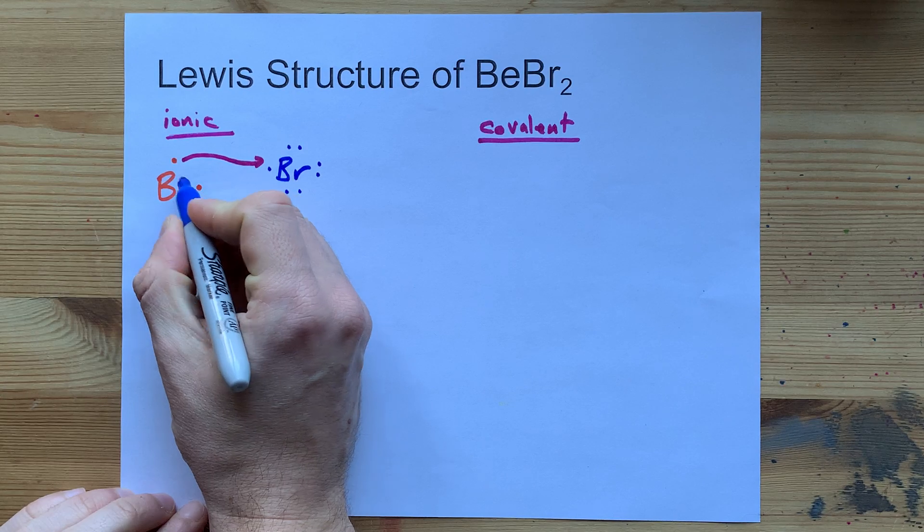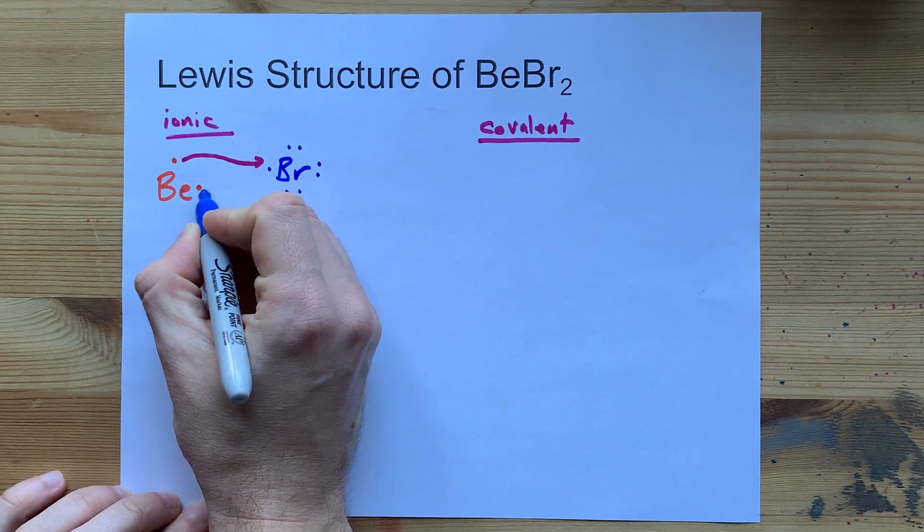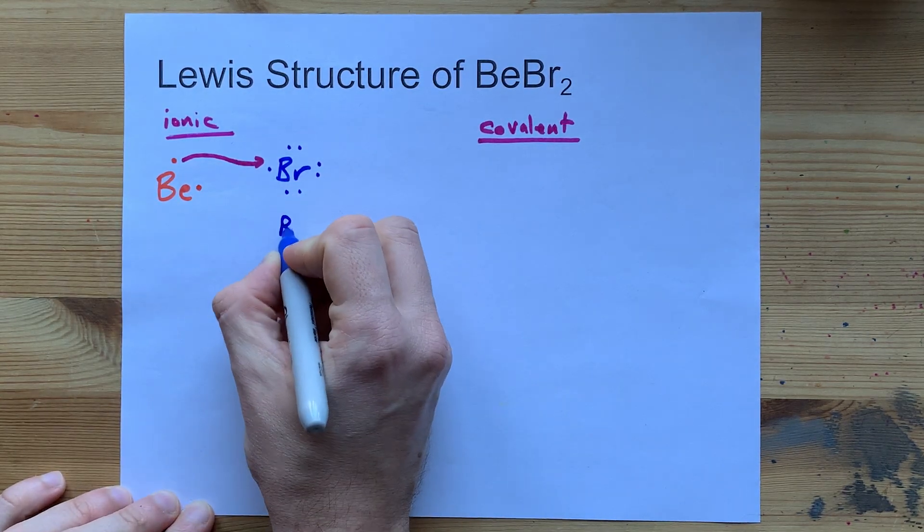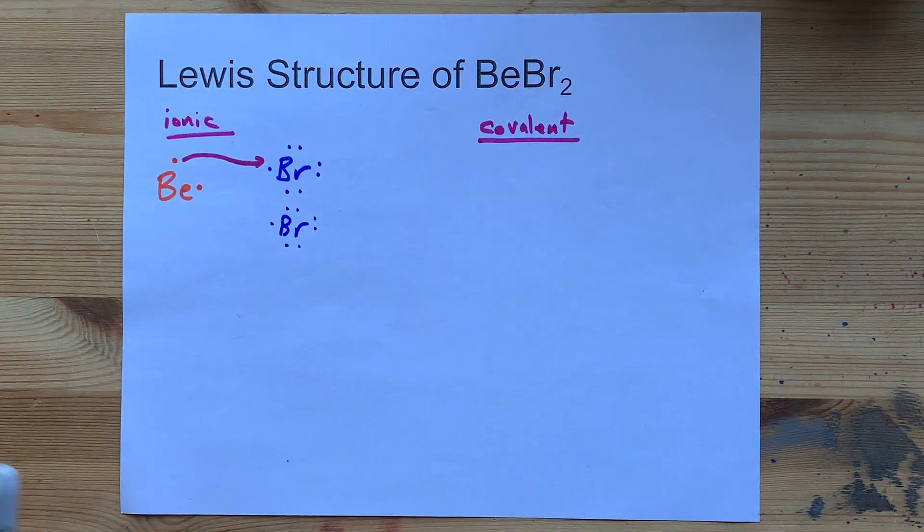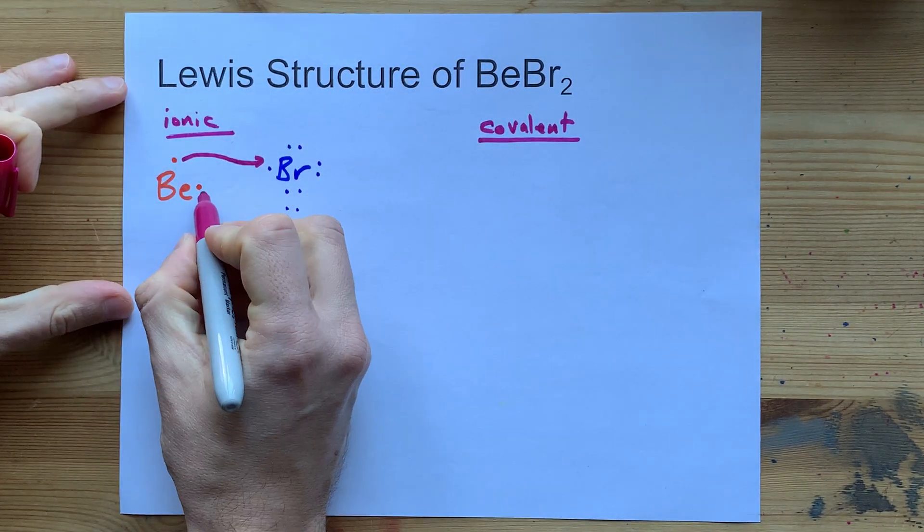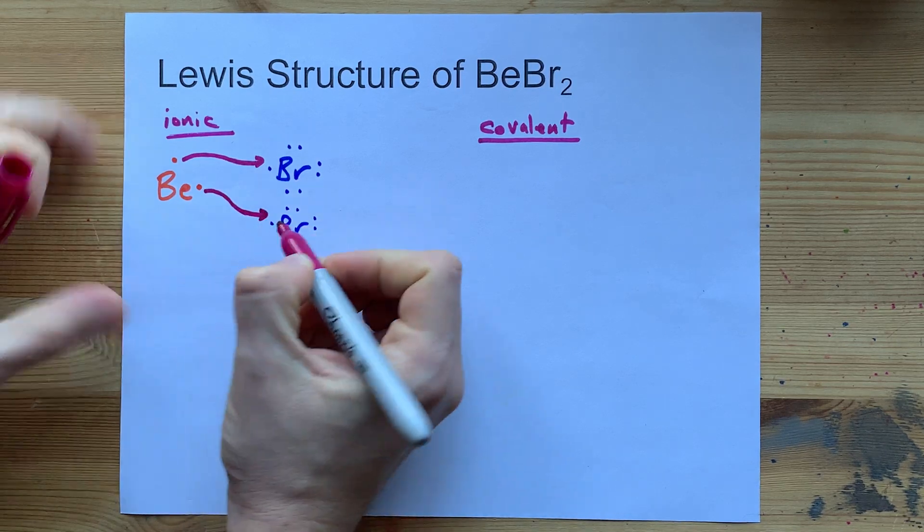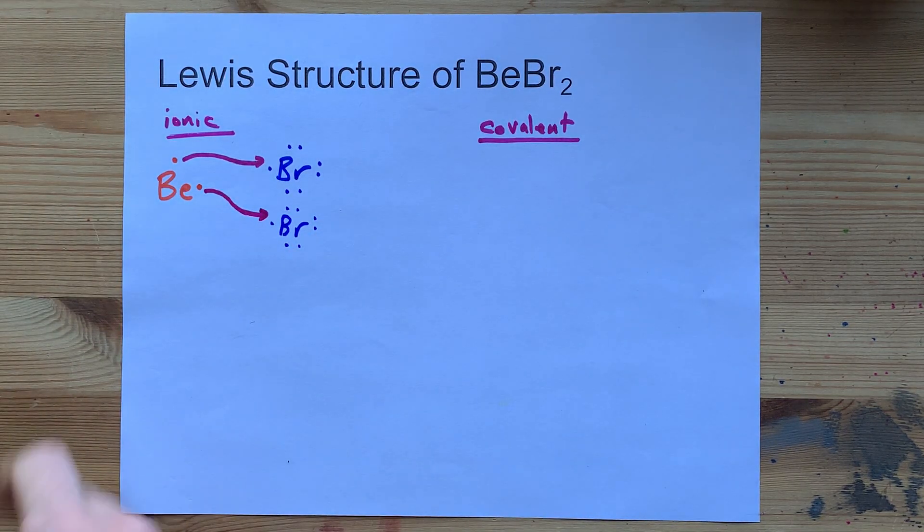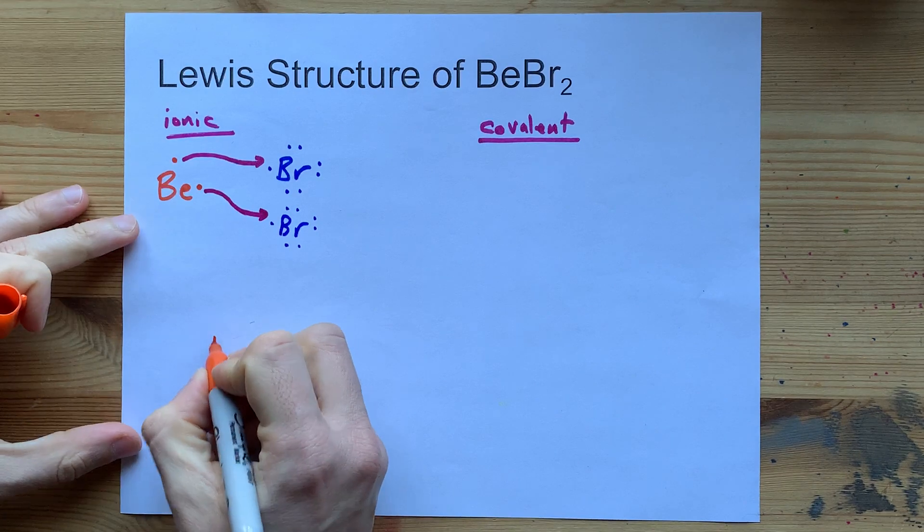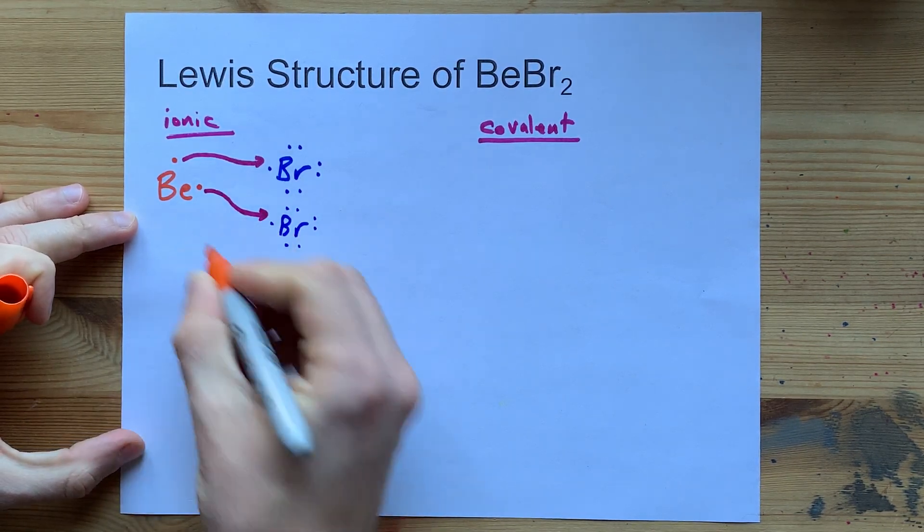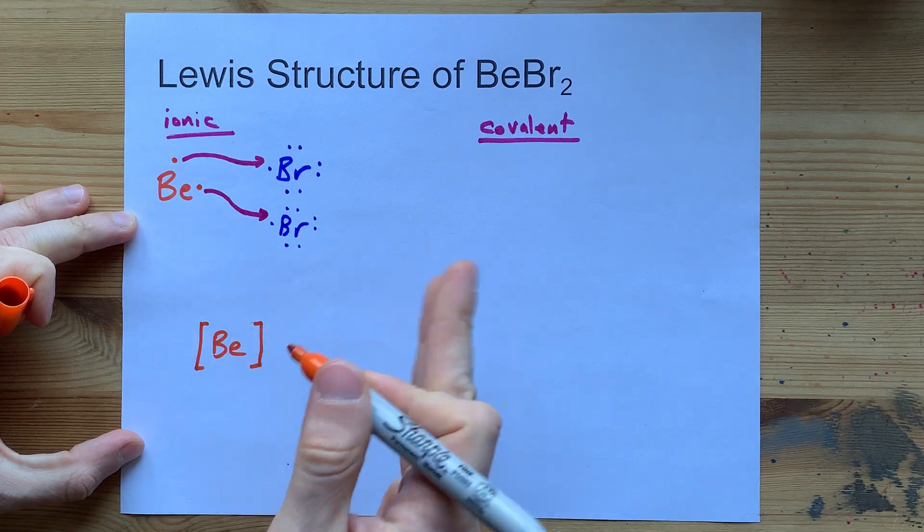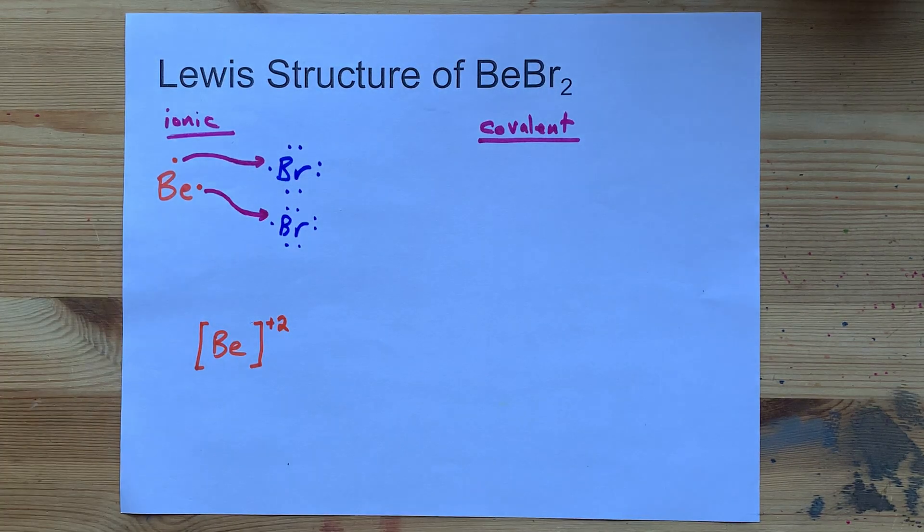How can we absorb another electron? The answer is to have another bromine atom with its seven valence electrons, and the beryllium gives its second electron to it. So that in the end, we have a beryllium atom with no electrons in what was its outer shell, and it lost two electrons, so it has a charge of positive two.